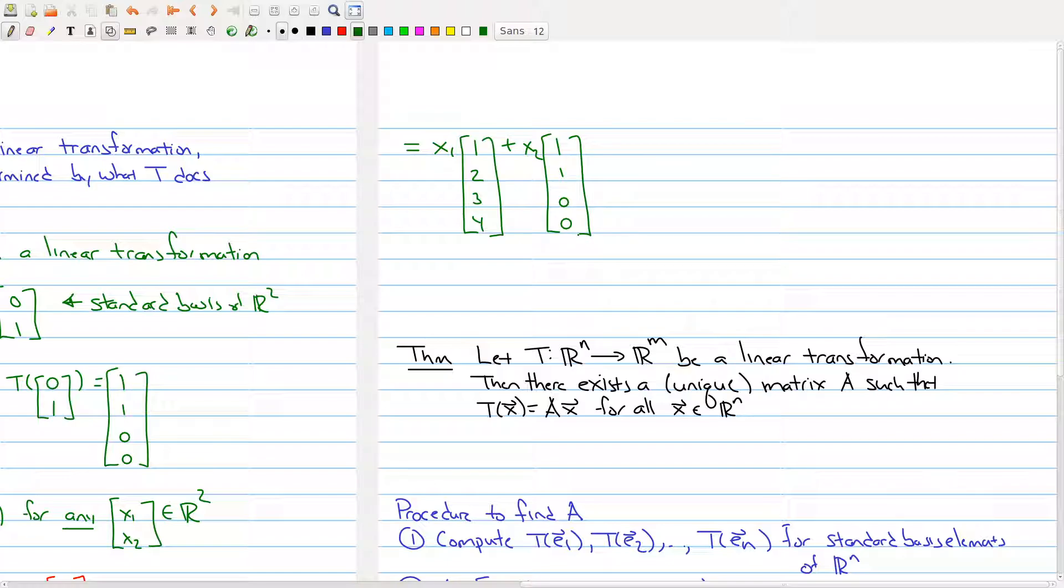And in fact, we could actually go a little bit further. Maybe you want a nice formula. And we could rewrite this as x1 plus x2, 2x1 plus x2, 3x1 plus 0, and 4x1 plus 0.